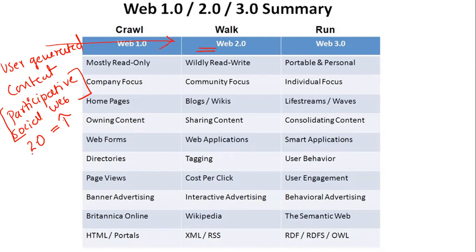With time, Web 2.0 has examples like Learning Management Systems (LMS) and Moodle. This web has helped make learning more course-centered and teacher-driven, with mobile phones becoming integrated with learning. Its features include wide read-write capability, community focus — that is, the participative social web — blogs, and wikis.